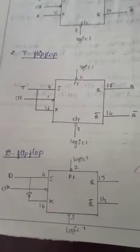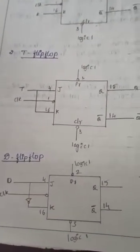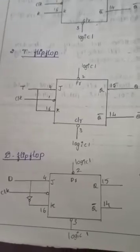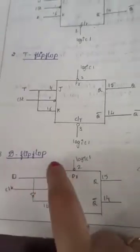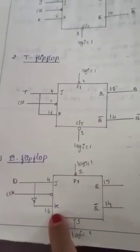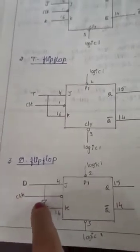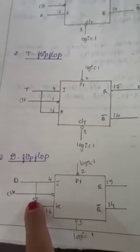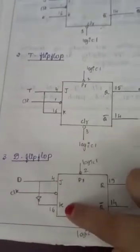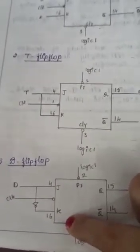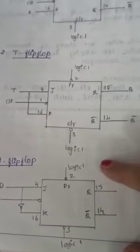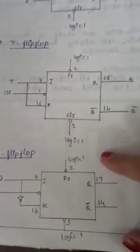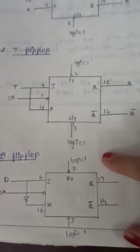Next is the D flip-flop, which can also be realized using the JK flip-flop IC. The J and K inputs are to be shorted, with a NOT gate inserted in between. The same input pins 4 and 16 are used for input, and pins 14 and 15 are used for getting the output.